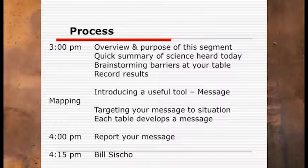Very briefly, what we're going to do between now and about 3:45 or so — we're starting a little bit early — is do a quick summary of the science we heard this morning, brainstorm some barriers or challenges facing pre-slaughter approval of products relative to protecting us against O157 at your individual tables, and I'll pass out a sheet of paper for you to write down your ideas. Then I'm going to introduce you to message mapping.